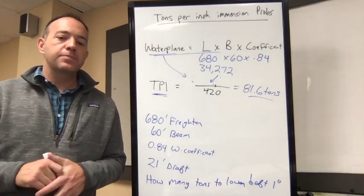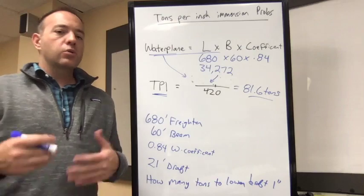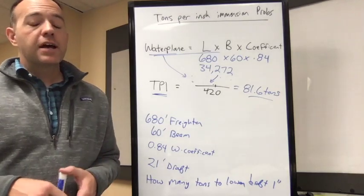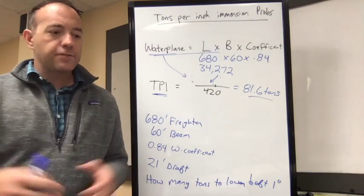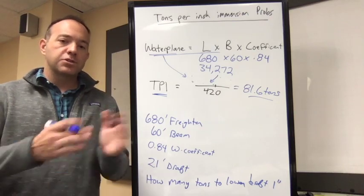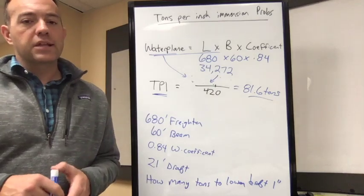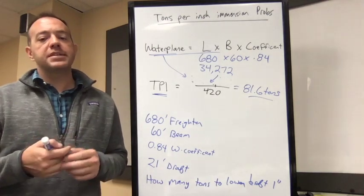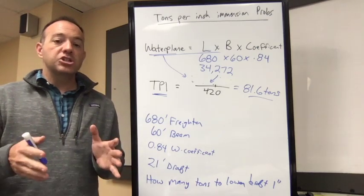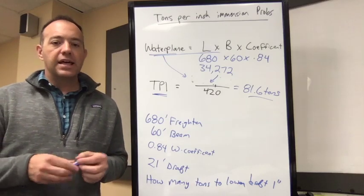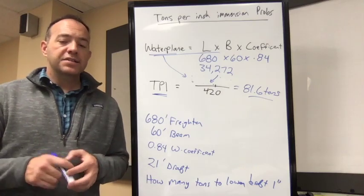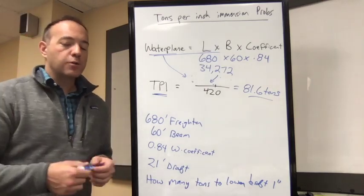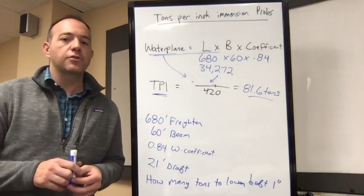That's it for tonight. We covered four different types of stability problems: basic stability terms (center of gravity, center of buoyancy, etc.), roll period problems, tons per inch immersion problems, weight shift problems, and center of gravity calculations. These are the most common ones at the 100 to 1600 ton license level. I'll leave a link to the Cutterman's Guide to Navigation Problems in the description below for more practice problems. If you have any questions, reach out at chris@practicalnavigator.org.